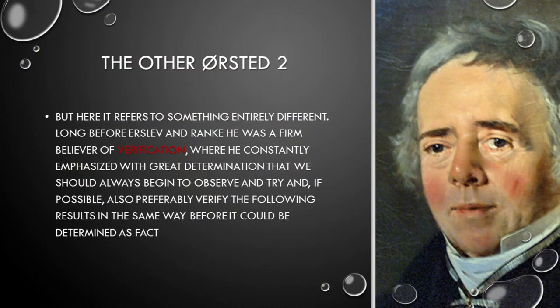The other Ørsted can also be perceived as something else — another side to Hans Christian Ørsted himself. What he did, which is not commonly known, is that he introduced the demand for a new science, a new scientific method. He was a firm believer in verification: you can't just go about and stipulate data without verifying them. He constantly emphasized with great determination that we should always begin by observing, and then, if at all possible, verify the results in the same way before something can be determined as fact.